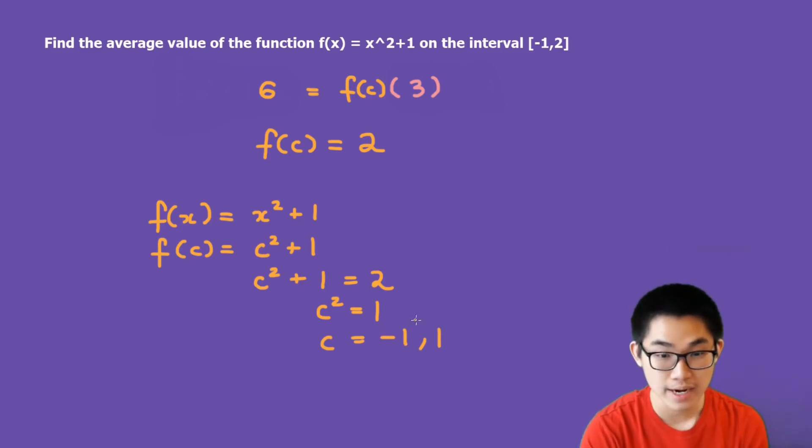Now, minus 1 is between negative 1 and 2, and 1 is also between negative 1 and 2. So these are valid answers. What happens if, let's say, the interval is 1 and 2, and we found out that c is minus 1 and 1? Well, minus 1 is not inside this interval, and this one is inside the interval, which means that minus 1 is not a valid answer.